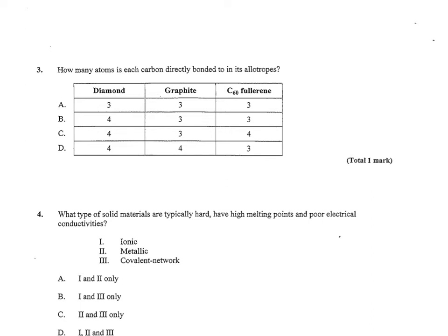Question number three wants to know how many atoms each carbon is directly bonded to in its allotropes. This is one you just have to memorize. Diamond being the hardest is able to bond to four, and then graphite and fullerene have some unique properties also but they're not as hard because they each only bond to three different carbons. So B would be my correct choice.